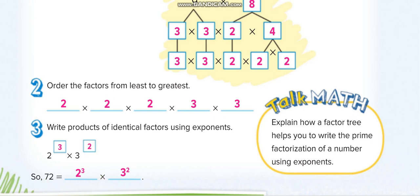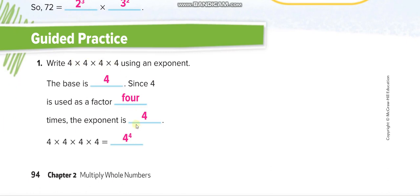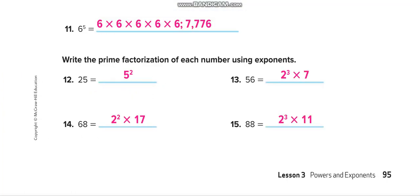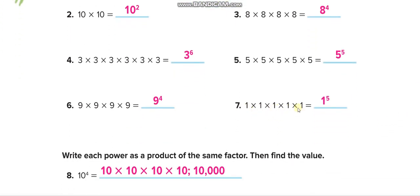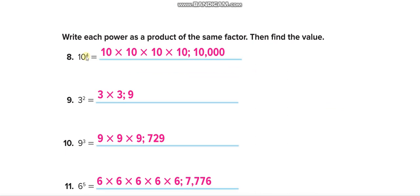Down here: 1, 2, 3, 4 — so the base is 4 and the exponent is 4. Next page: 10 times 10, base is 10 and power is 2. Counting factors: 1,2,3,4 gives power 4; 1,2,3,4,5 gives power 5; 1,2,3,4 gives power 6. By the way, any power of 1 gives you 1 — 1 times 1 is always 1.